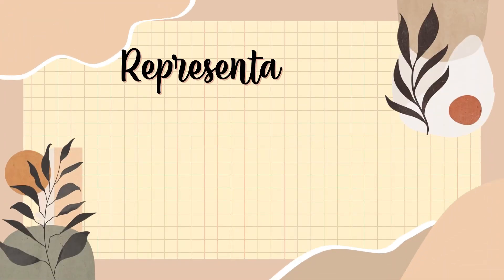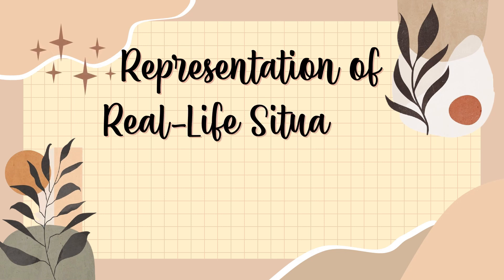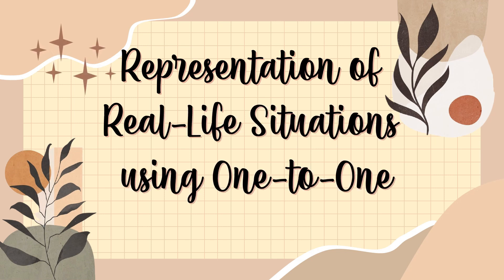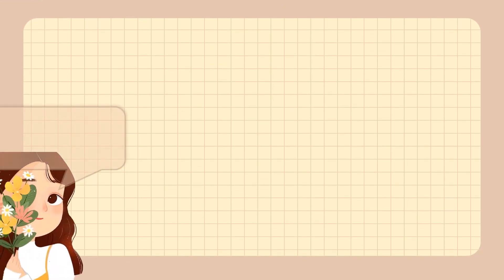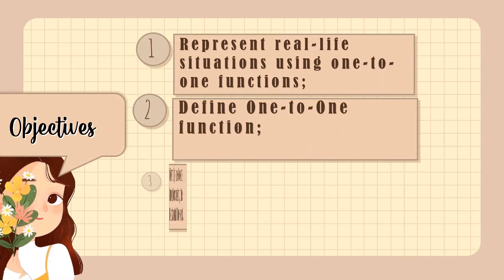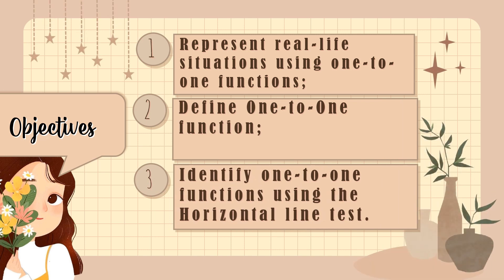Good day everyone. Today we are going to discuss the representation of real-life situations using one-to-one functions. Our objectives for this lesson are: first, to represent real-life situations using one-to-one functions; second, to define one-to-one functions; and third, to identify one-to-one functions using the horizontal line test.